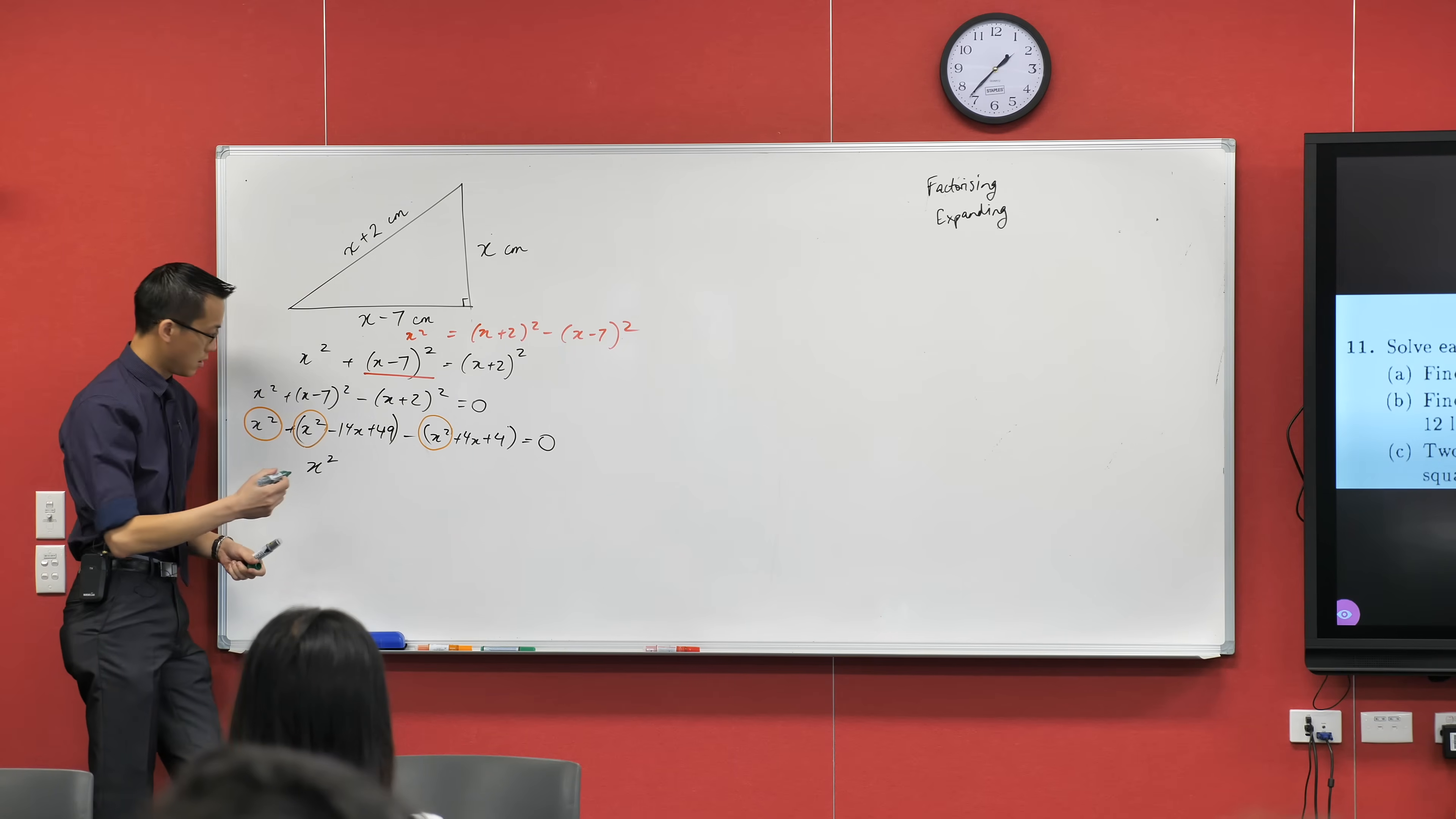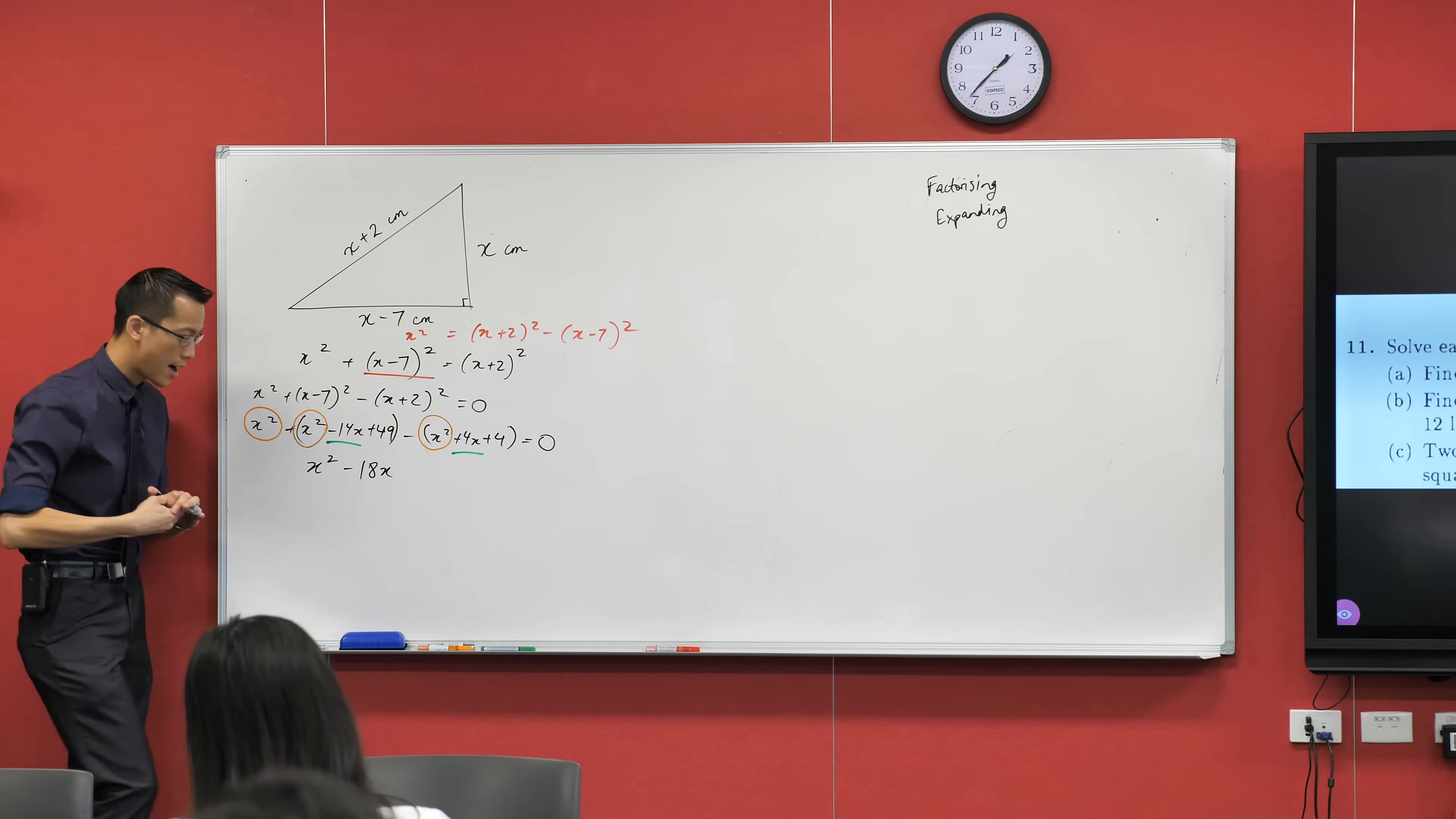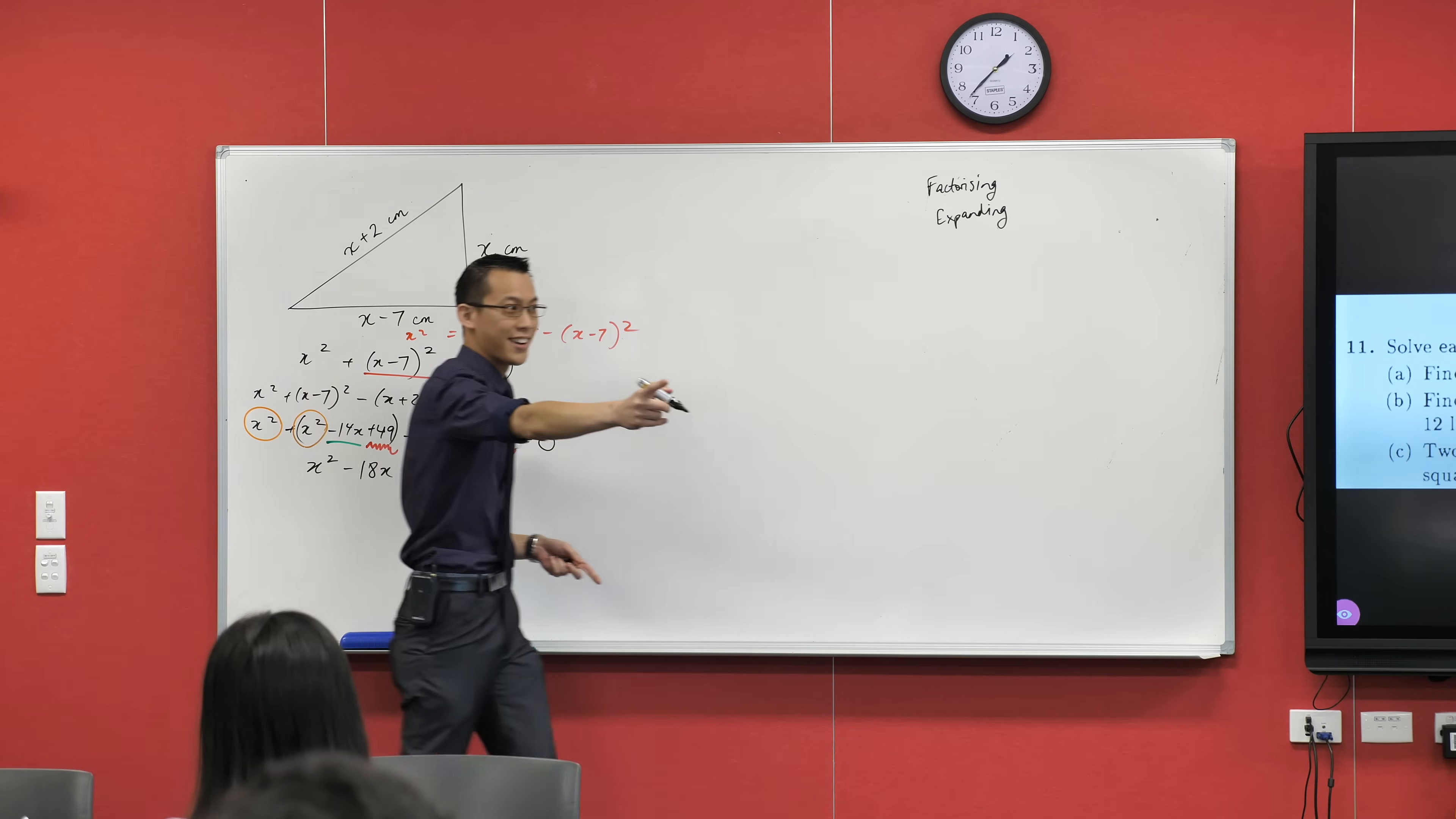What am I going to look at next? I've got these x terms, but watch out—there's this minus sign hanging out there attached to that. So I've got minus 14x and minus 4x, so I end up with minus 18x.